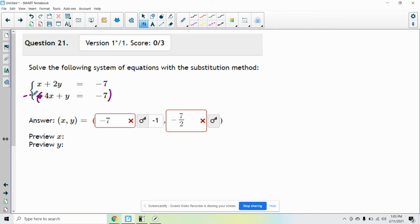So the top equation I'm just going to rewrite: x plus 2y equals negative 7. And then the bottom I'm going to have negative 2 times 4x which is negative 8x, negative 2 times y which is negative 2y, equals negative 2 times negative 7 which is positive 14.